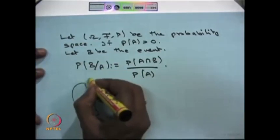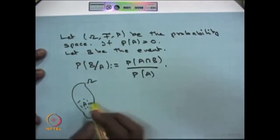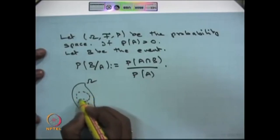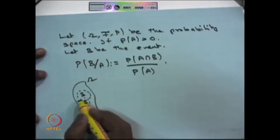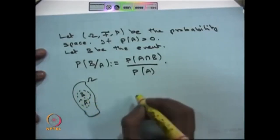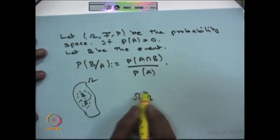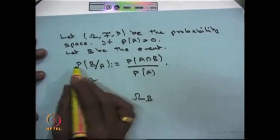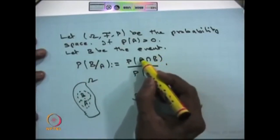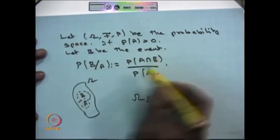You have the sample space omega, and within it an event A. Given that event A has already occurred, and you have another event B, you are asking what proportion of A is covered by B — that is, what is the probability of event B occurring in the reduced sample space. This is the same as using the definition: P(B|A) = P(A ∩ B) / P(A). So you find what corresponds to A ∩ B and take the ratio of P(A ∩ B) to P(A), which gives the conditional probability.